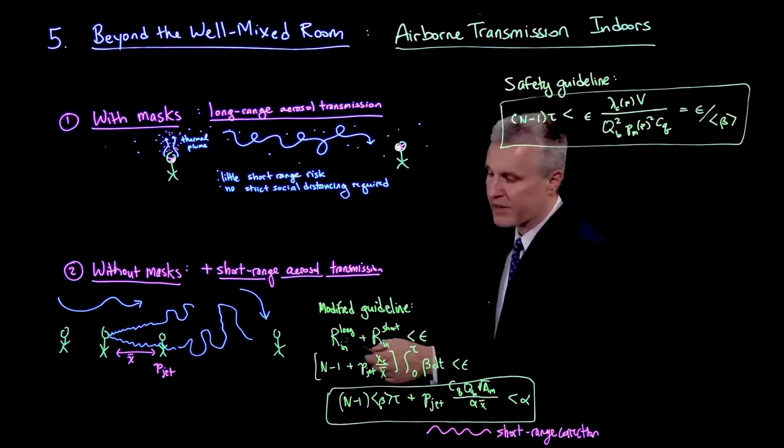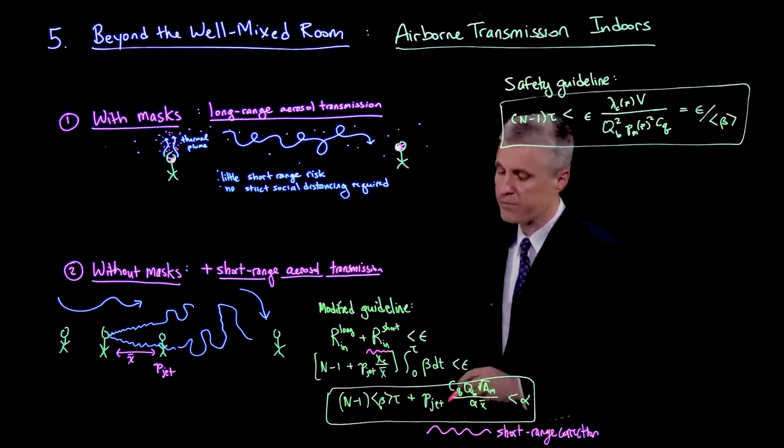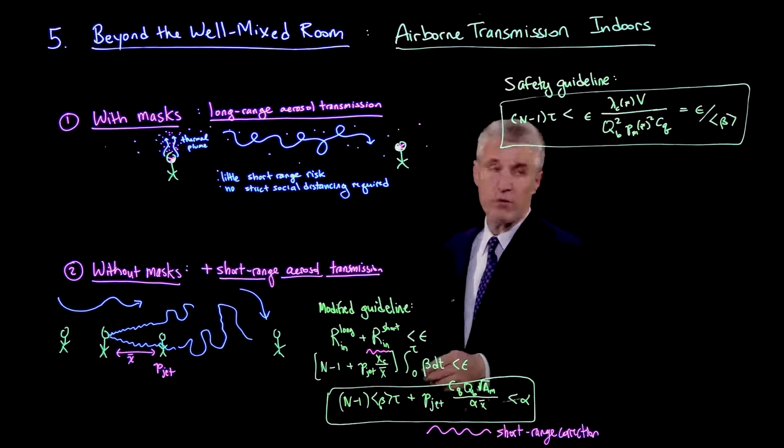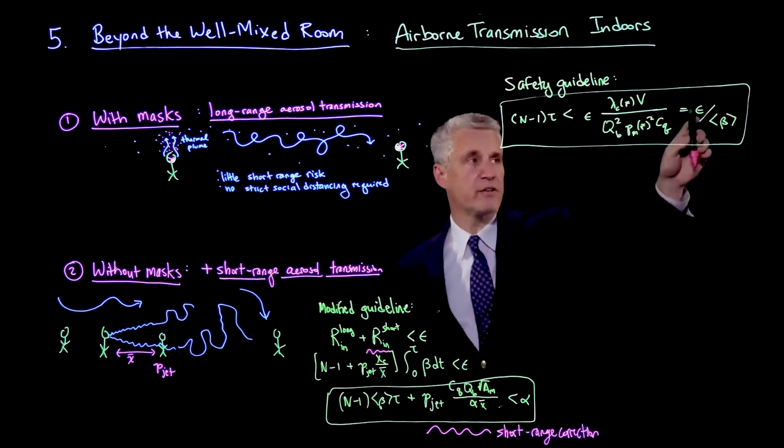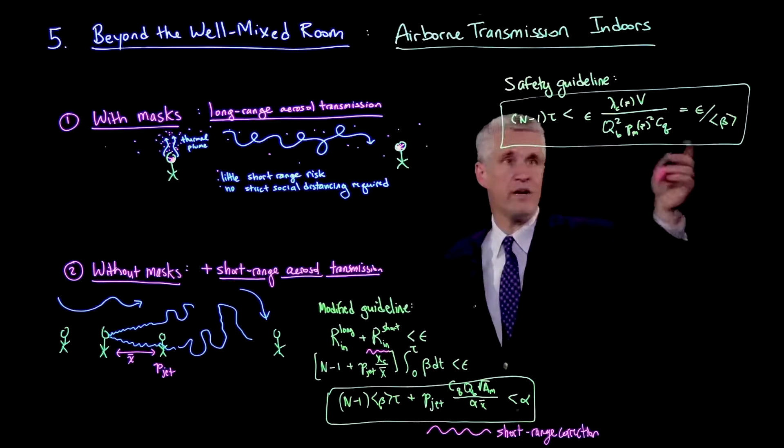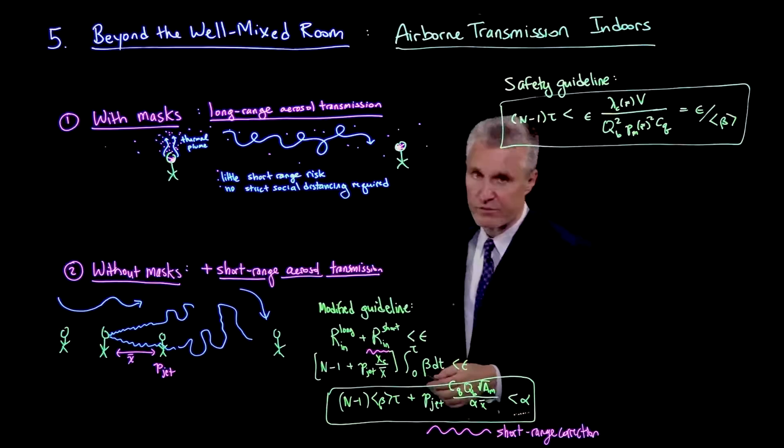So to make a modified guideline, we can take the long range indoor reproductive number and add a short range correction. We've already calculated what this looks like. So if I write the guideline as n minus 1 tau is less than epsilon over the average beta, I can also restore what that means here. Average beta times tau is the time integral of beta, basically the transmission rate.